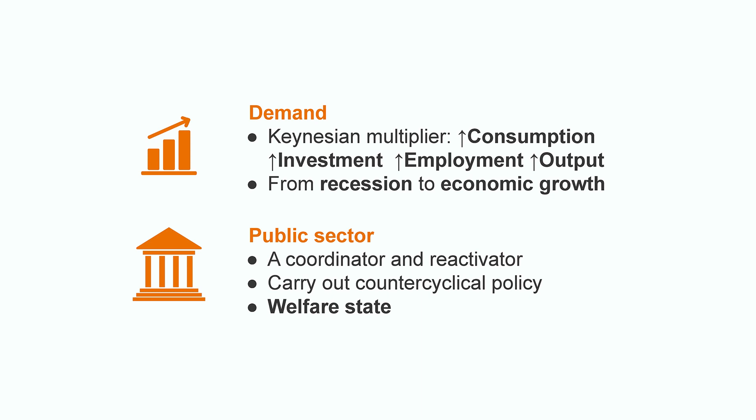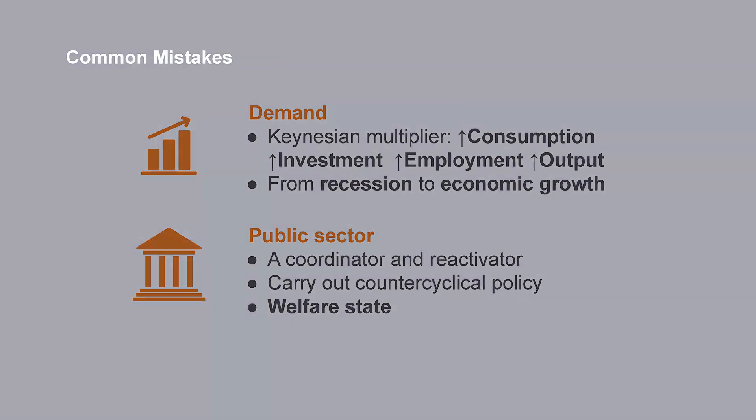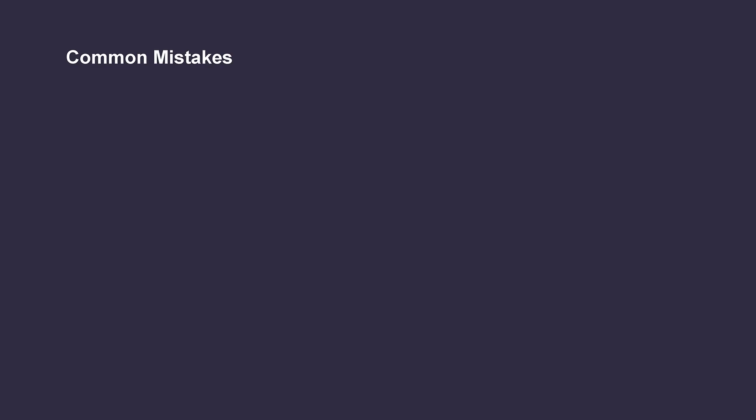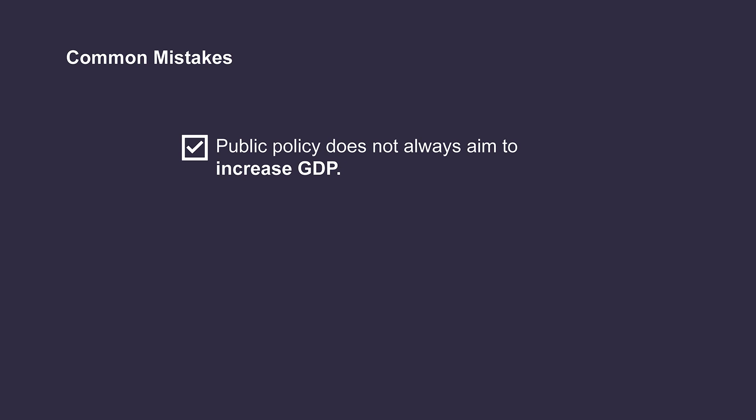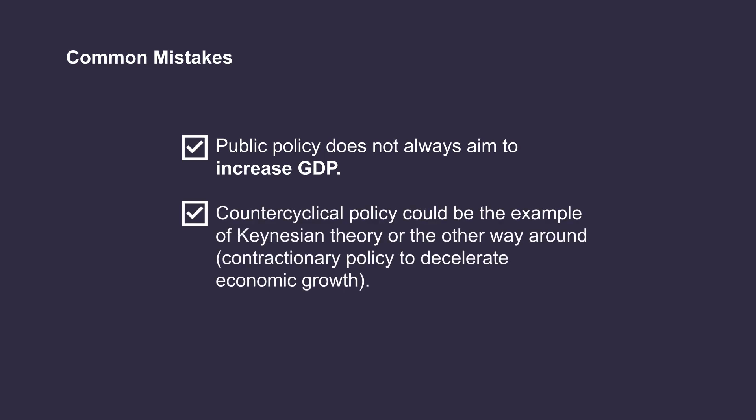This was the first of what we know as the welfare state. What are the most common mistakes? Public policy does not always aim to increase GDP — contractionary policy seeks to diminish the effect of inflation. Also, counter-cyclical policy could be an example of Keynesian theory: expansionary policy to offset economic recession. Or it can also be the other way around: contractionary policy to decelerate economic growth. But this happens mostly in contexts where inflation starts to grow.